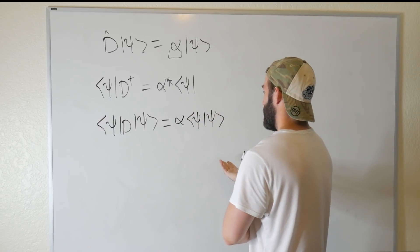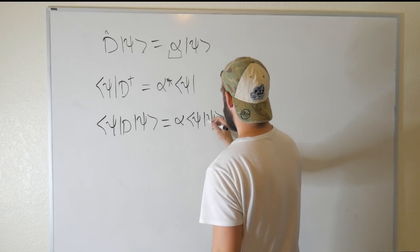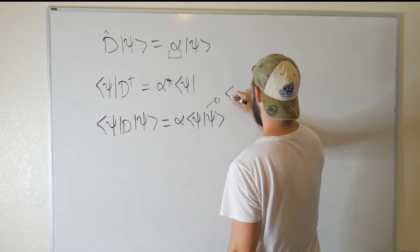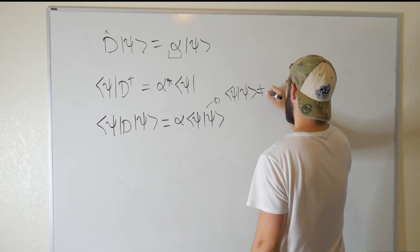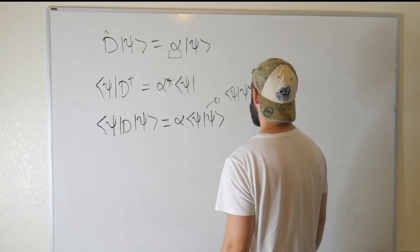And we're not going to make any assumptions right now about whether these are orthonormal or whatever, but let's just say that, let's assume that ⟨ψ|ψ⟩ isn't zero, because that would just be boring. And it also wouldn't really make sense.